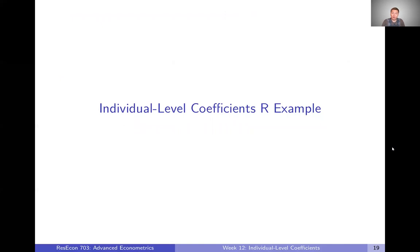That covers a couple of the things we can do with conditional distributions of coefficients. There are certainly others, and in your own research you might run into cases where there are other things you want to do with these conditional distributions. There's a bit more about them in the Ken Train textbook. In class this week, we're going to work through an example where we actually simulate these ourselves in R, so look forward to that, or take a look at the slides and code if you want to explore on your own.